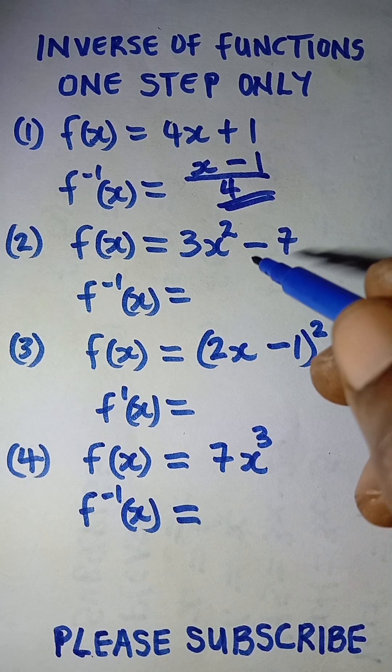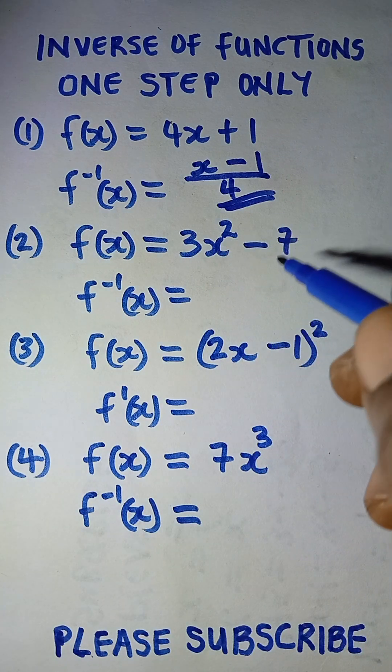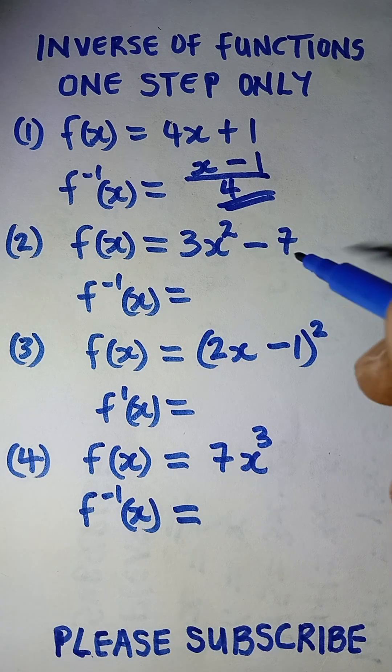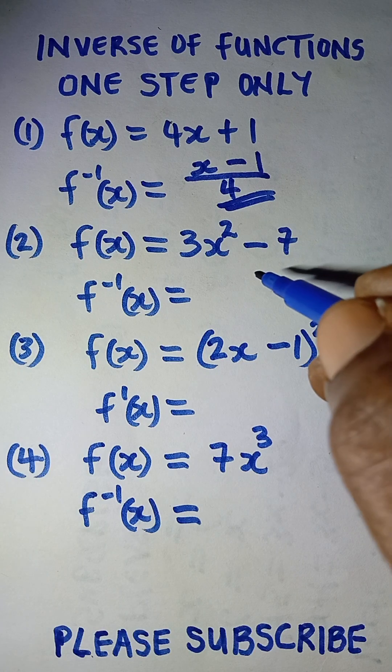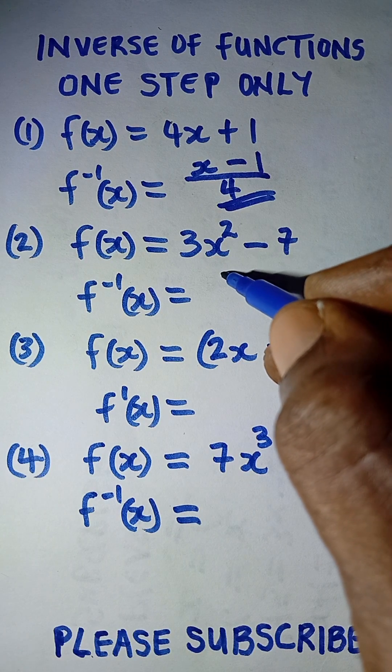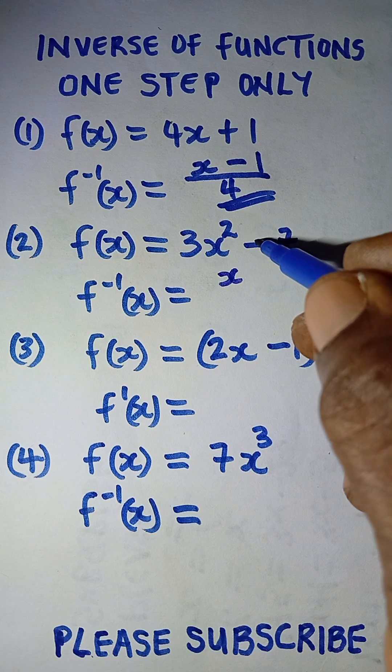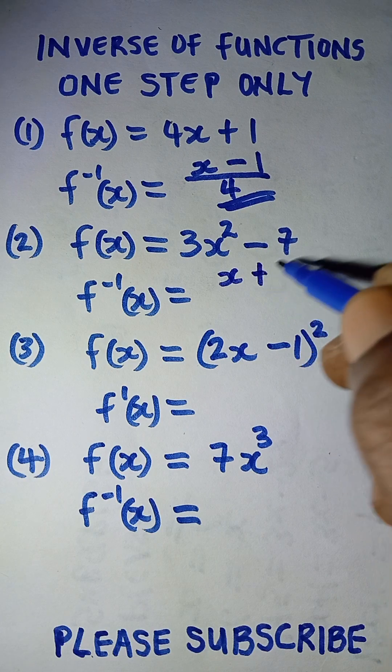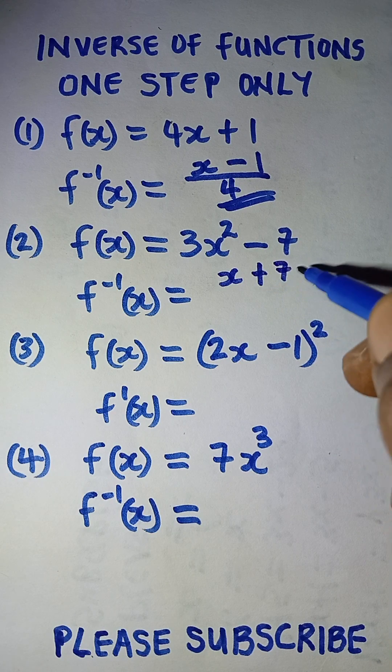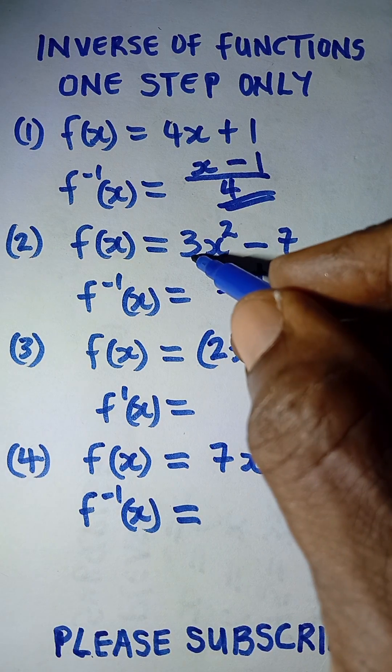Then the second one says 3x squared minus 7. What you just need to do here is to take this x here, change the sign here, this becomes positive seven, then all divided by the number here, three.